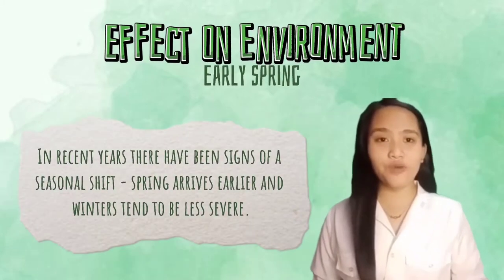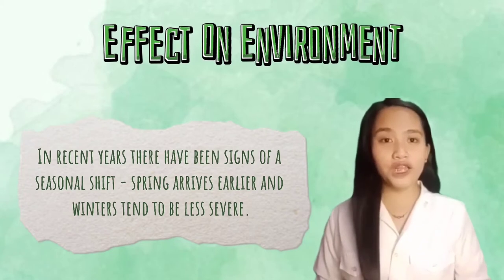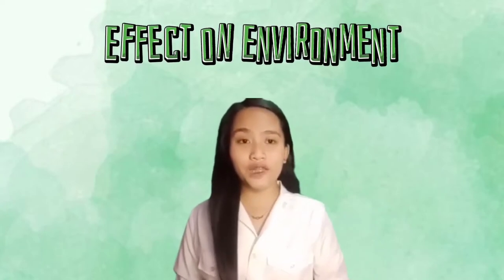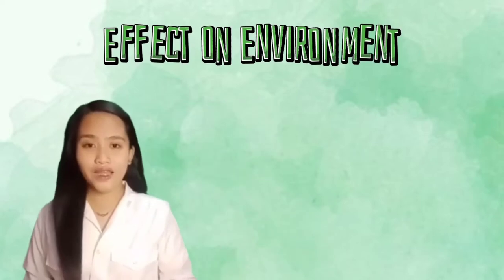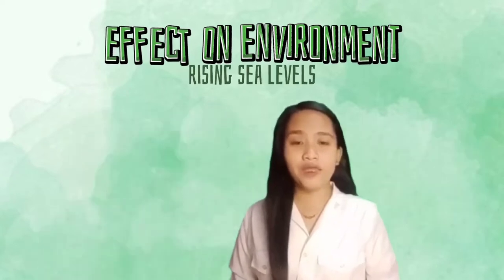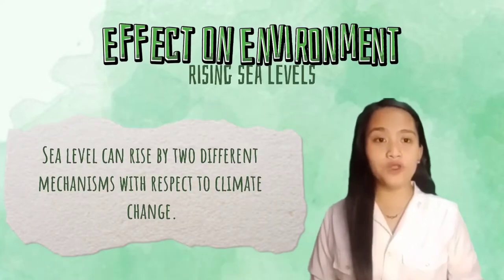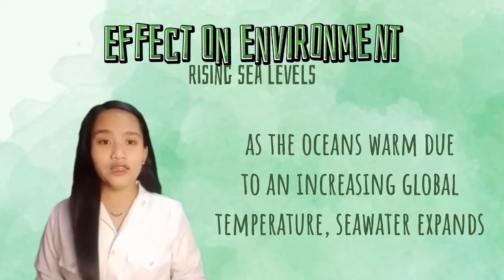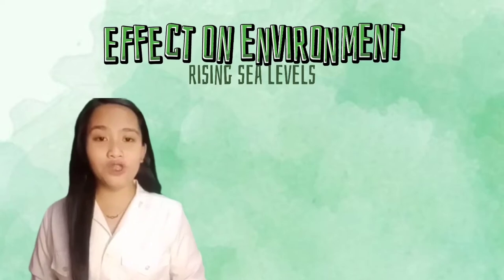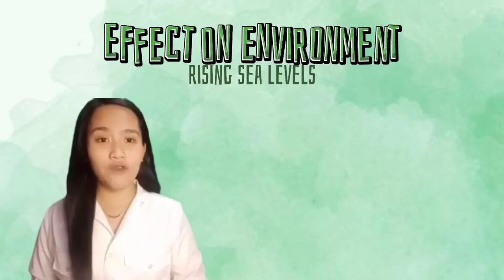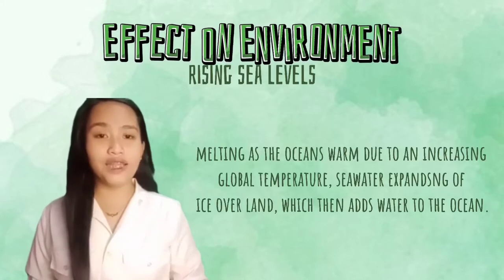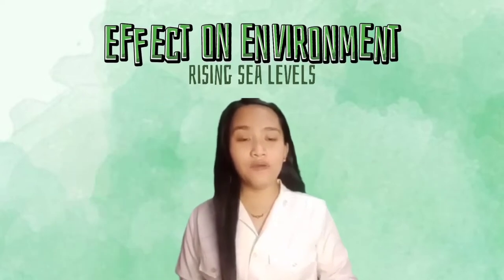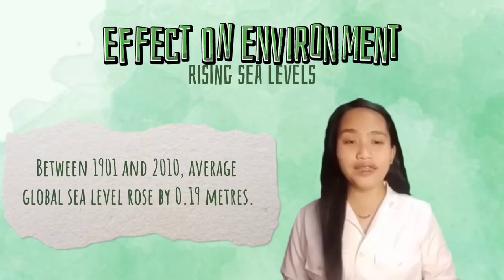In recent years, there have been signs of a seasonal shift — spring arrives earlier and winters tend to be less severe. These seasonal changes affect the nesting and migration patterns of wildlife. Sea levels are also rising. As the ocean warms due to increasing global temperature, seawater expands, taking up more space in the ocean basin. The second mechanism is the melting of ice over land, which adds water to the ocean. Between 1901 and 2010, average sea level rose by 0.19 meters.